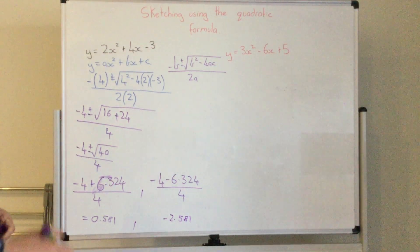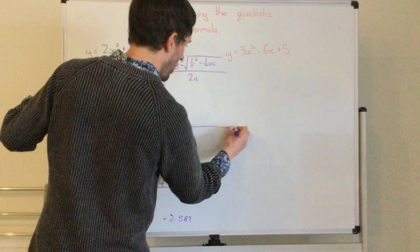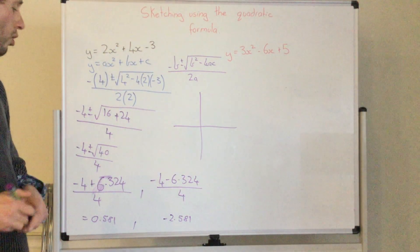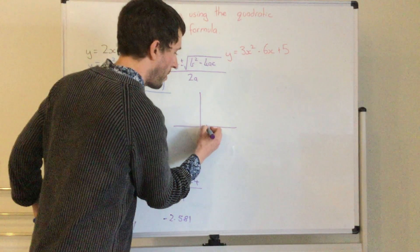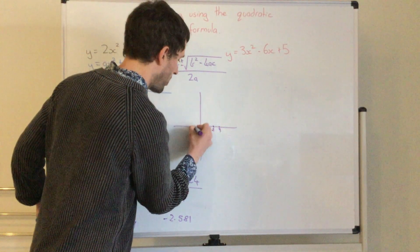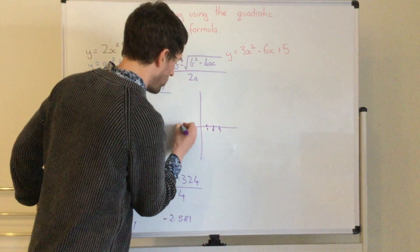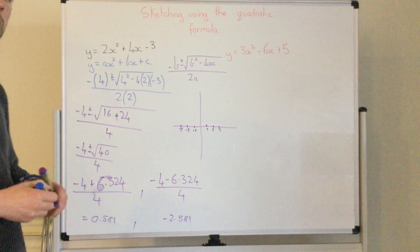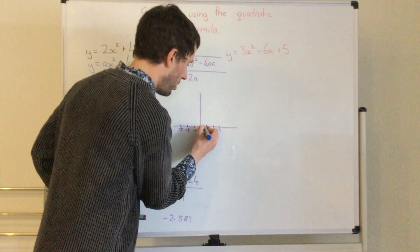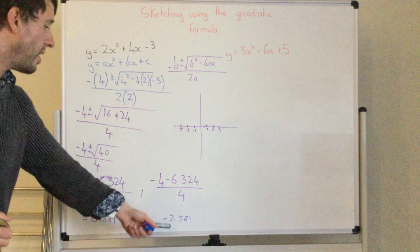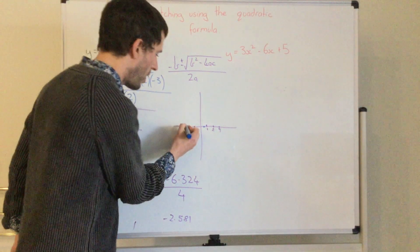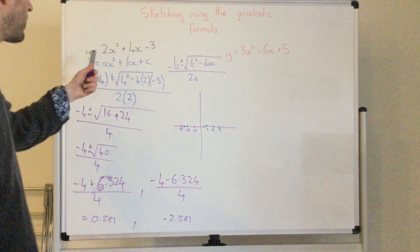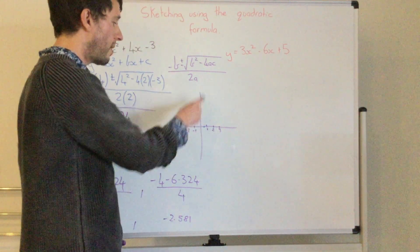So if I am drawing a graph using this formula, I'm going to put my two points on. So first I need to make sure I've labelled my x-axis. So my point is 0.581, that will be roughly there. And negative 2.581. So those are my two intercepts. Now I know it is a min because my a is positive, so it's going to be down here somewhere.